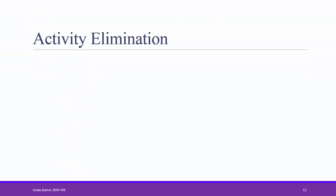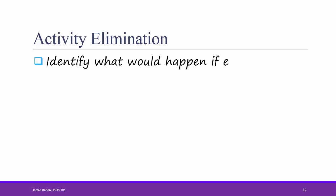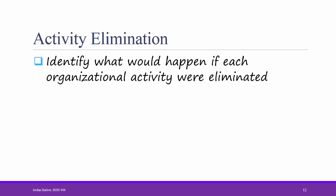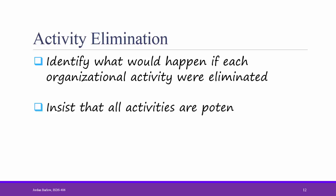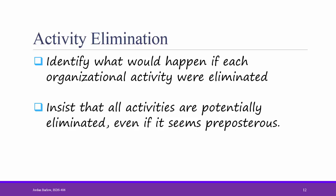One final requirements analysis strategy is activity elimination. In activity elimination, the analyst identifies what would happen if each organizational activity were eliminated. He or she must insist that all activities are potentially eliminated, even if it seems preposterous. In our example, the analyst would ask: what would happen if the customer didn't meet with a loan officer? What would happen if the customer's credit wasn't checked? And so forth. In this way, the analyst works with the organization to find improvements at each and every step of the process, and could potentially eliminate whole steps or at least automate them through a digital system.